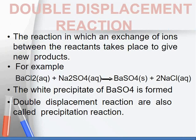Double displacement reaction — a reaction in which an exchange of ions between the reactants takes place to give new products. Here you can see an example of double displacement reaction. In this example, the white precipitate of barium sulfate is formed.